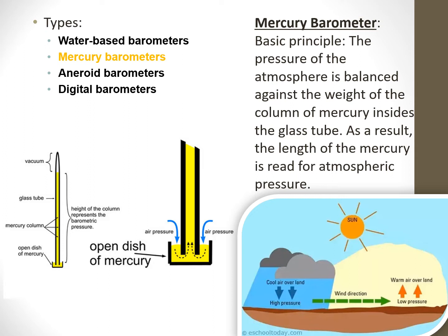Mercury barometers work by balancing the weight of mercury in a glass tube against the atmospheric pressure, resulting in a rise or fall of mercury. The length of the mercury column is read for the atmospheric pressure. If the mercury indication rises, that means there is high pressure with sinking air which will bring warm weather. And if the mercury indication is falling, that means we have low pressure with rising air that will bring cold weather.